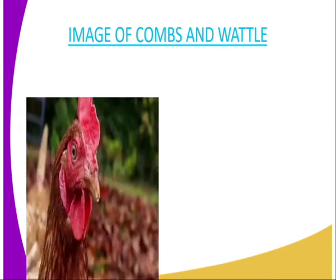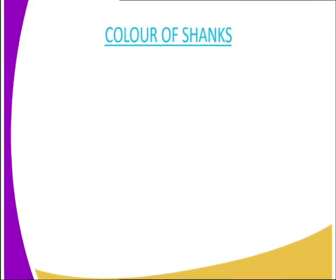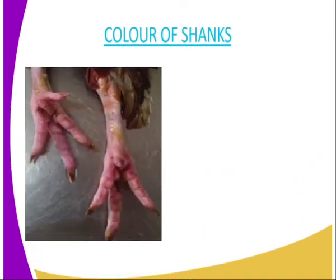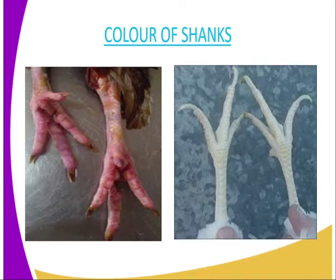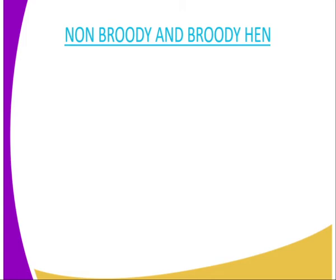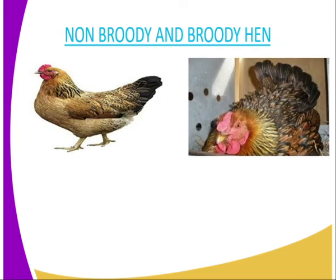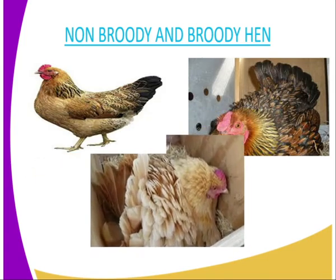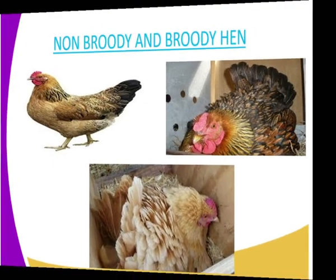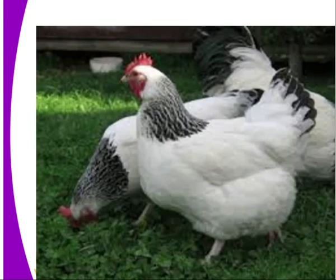Looking at the images of combs and wattles for a good layer, you can see these are good layers. Then we have the color of shanks — the shanks are red for a good layer, and those that are yellow indicate a poor or non-layer. Here we also see a non-broody and a broody hen — you can see the appearance of a non-broody and the broody in the second image. These are a continuation of images showing good layers.